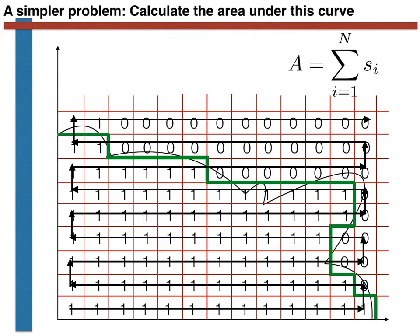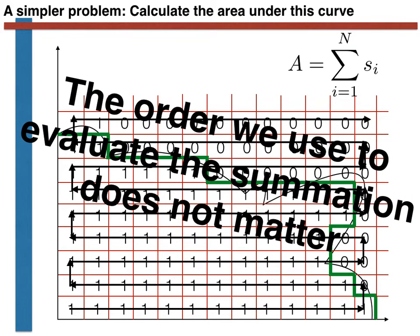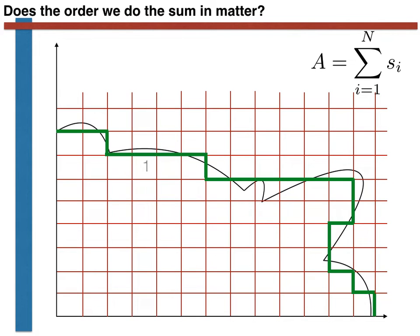We now arrive at an important realization in terms of Monte Carlo sampling. Namely, that because the series is finite, the order in which we add together the terms is not important. Consequently, even if we add all the terms together in the random order that is shown on this next slide, the final value that we get for the integral will be the same.